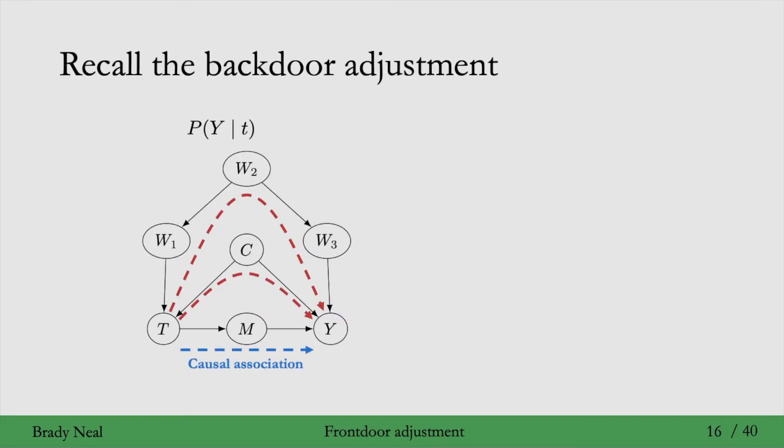Let's quickly recall the backdoor adjustment. If we're looking at P of Y given T here, we have non-causal association flowing along these backdoor paths. But we can fix that by blocking those backdoor paths by just conditioning on W2 and C, for example. So we can get identification in this graph just using the backdoor adjustment.